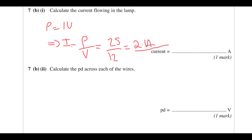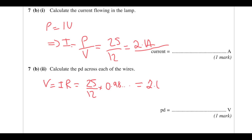Calculate the potential difference across each of the wires using Ohm's law V = IR. Using the unrounded current — 25/12 — times by 0.98 ohms gives 2.04, so 2.0 volts across each wire.